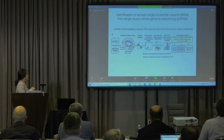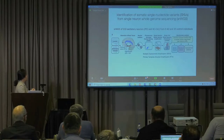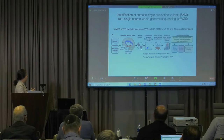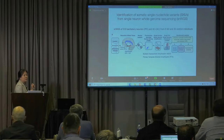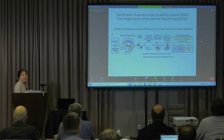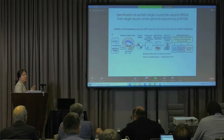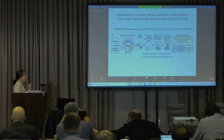We performed single nucleus whole genome sequencing. Briefly, we obtained post-mortem frozen brain tissues and isolated individual neuronal nuclei using a NeuN-specific antibody and FACS sorting. We have only picograms of DNA from each nucleus, so we amplify to microgram quantities for whole genome sequencing. We tried two different amplification approaches, MDA and PTA, and then sequenced at about 40x coverage for each neuronal genome.